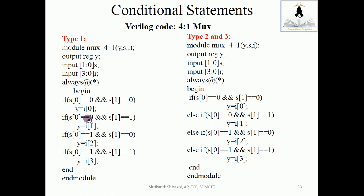In Type 1 style, when s[0]=0 and s[1]=0, i0 is assigned to y; for 0,1 — i1; for 1,0 — i2; for 1,1 — i3, with no else statement. In Type 2 and Type 3 we have else statements after each condition. Both work, but I recommend using Type 2 or Type 3. I will now go to the Xilinx environment to execute this 4-to-1 mux using conditional statements.